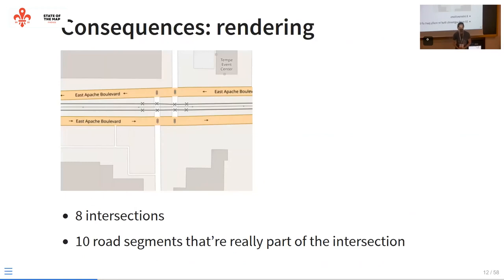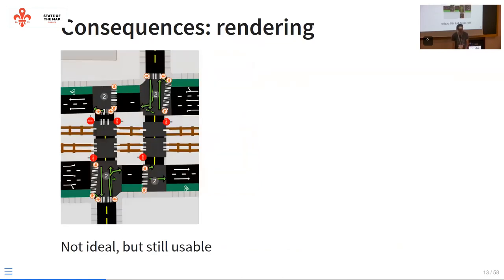But this causes a lot of problems for the stuff I'm interested in. One consequence — if we're just trying to render things with the level of detail in the lanes — this is an example in Arizona with a streetcar line between a dual carriageway. In reality we're looking at one intersection, but in the graph representation it's eight intersections with about ten small bits of road in between. The default rendering at this lane level of detail shows a lot of really short segments of road between the intersections. This still kind of works — it's not that bad — but it can get a lot worse.